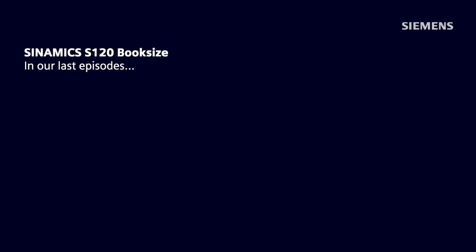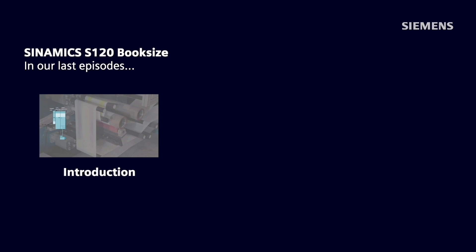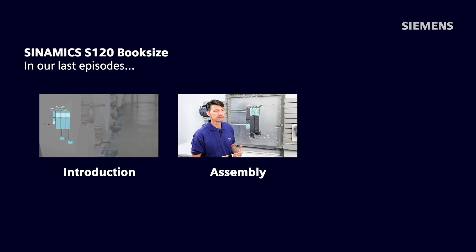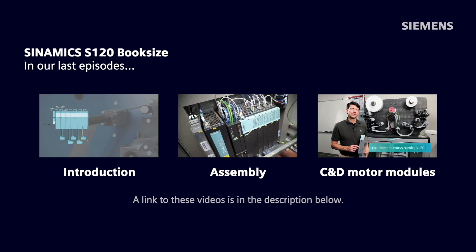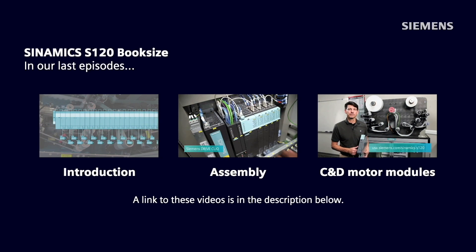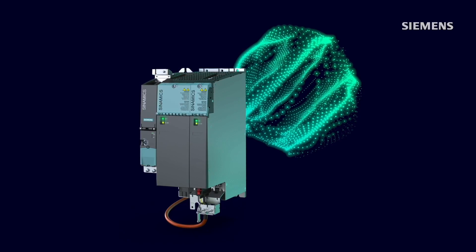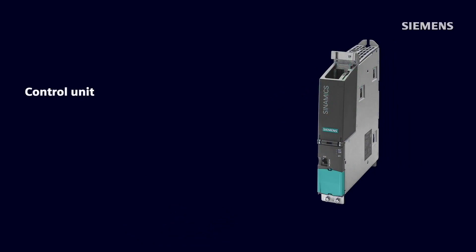To review from the previous introductory S120 videos, let's take a look at the three main components of an S120 multi-axis system using the very popular book size format as seen in this example. We have the control unit, which is really the brains of the S120 drive system and is where all the interfaces, software, and programming takes place.